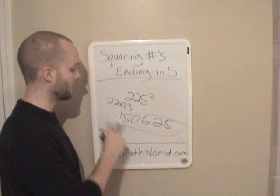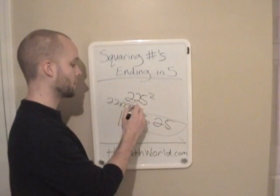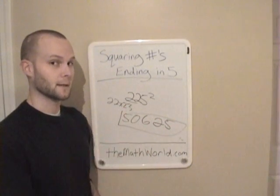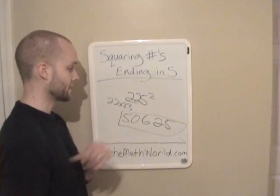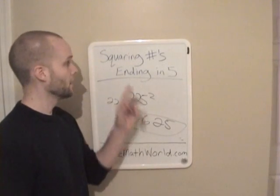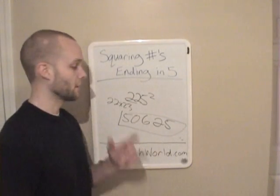You just write down 25, and then you take this number and multiply it by the next highest number, and that's going to give you the answer. That's an easy way to square any number that ends in 5.